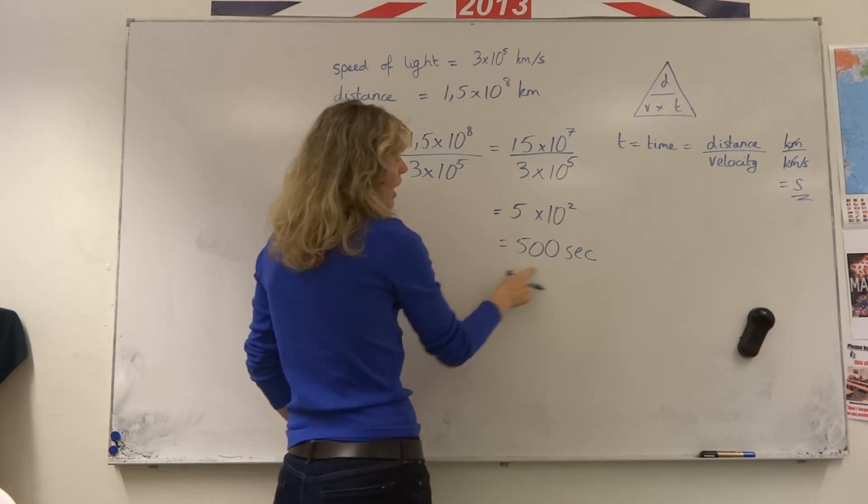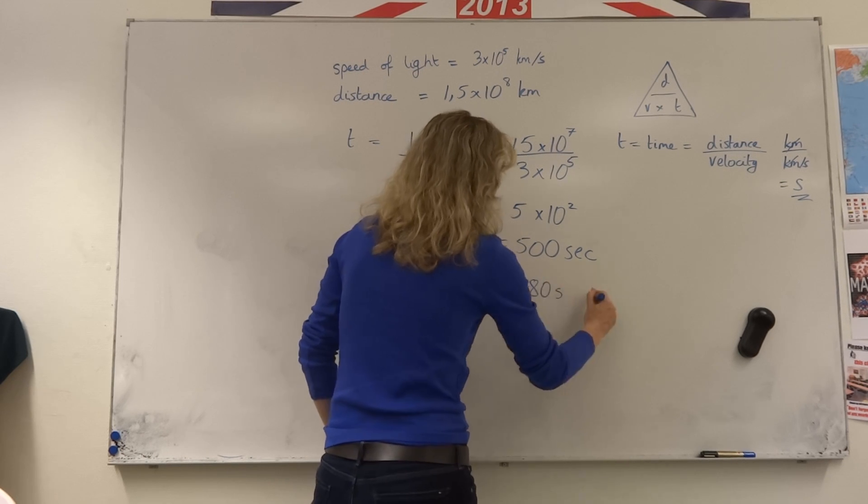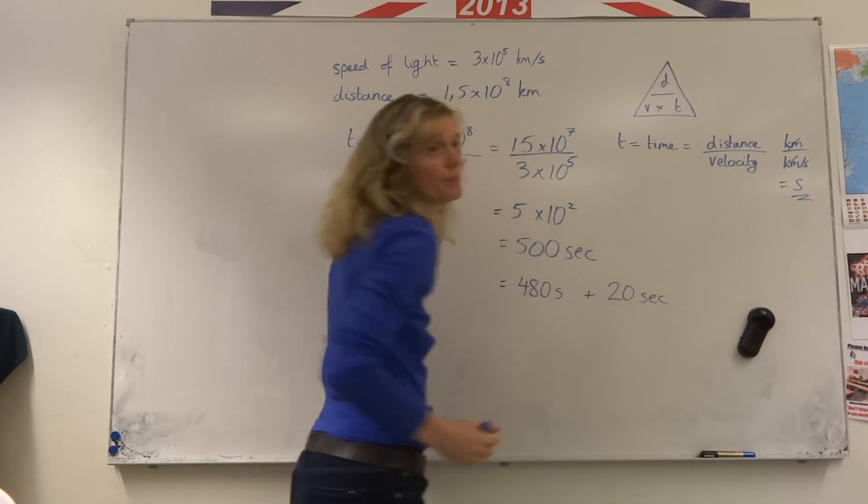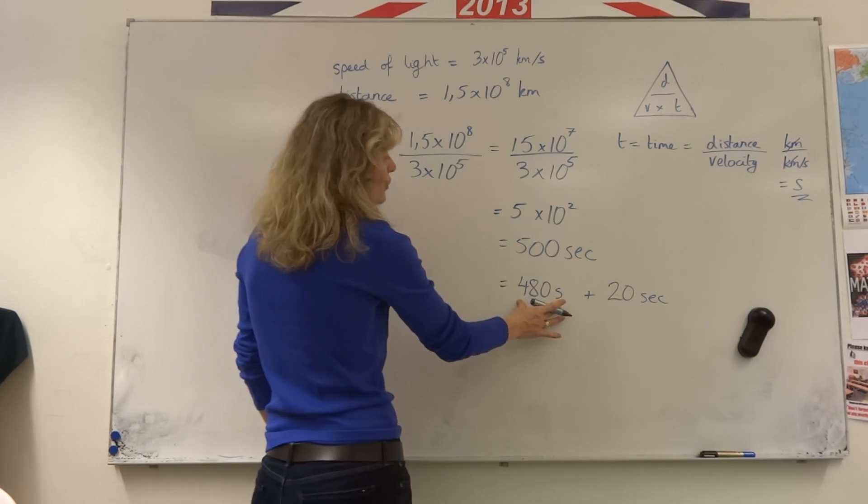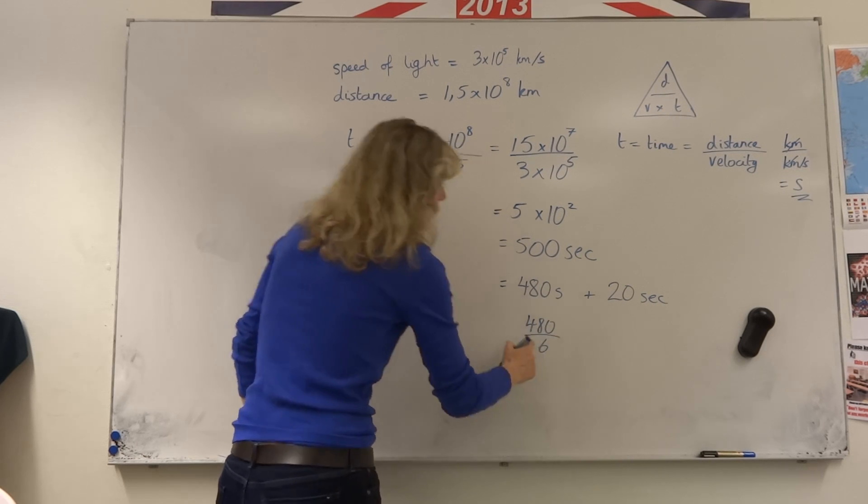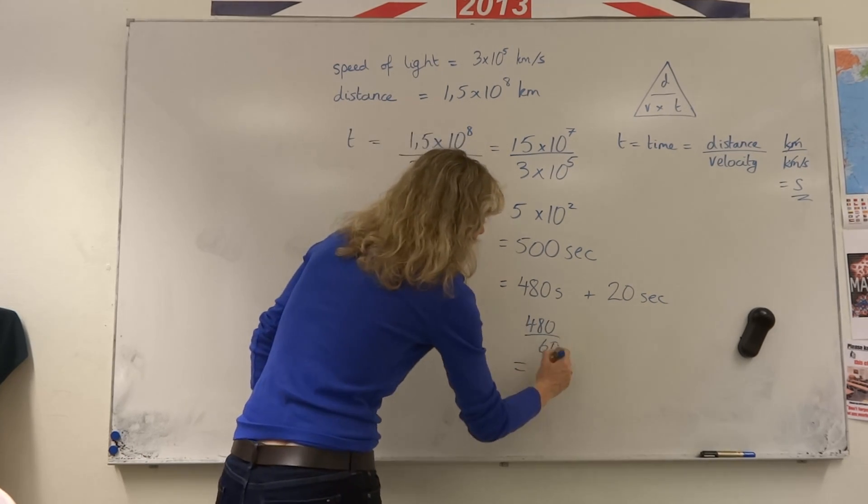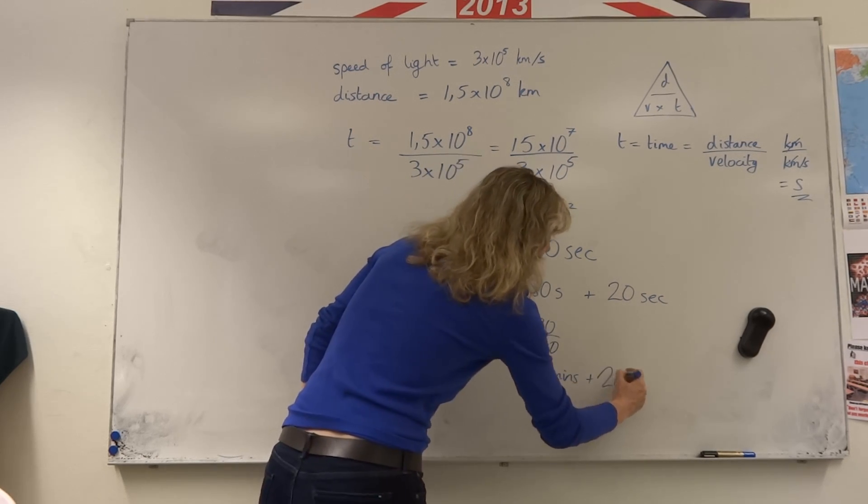If we convert 500 seconds into 480 seconds plus 20 seconds left over, so you don't make a silly mistake here. 480 can then be divided by 60. 480 into 60 goes 8 times. So you get 8 minutes and 20 seconds.